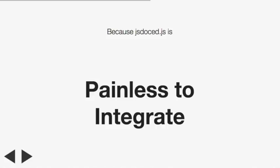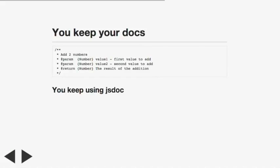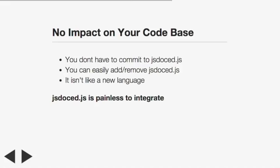After that, it is painless to integrate. You take your JavaScript file and you can run the better.js version or the same version - they should behave the same, except that in plain JavaScript you don't do the type checking. You keep your code, you keep your documentation, there is no impact on your code base.